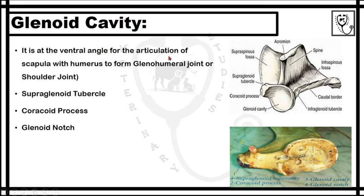The glenoid cavity is a cavity at the ventral angle or ventral part of the scapula bone for the articulation of the scapula with the humeral head to form the glenohumeral joint or shoulder joint. In this clearer picture of the ventral part of the scapula: this is the glenoid cavity, this is the coracoid process, this is the supraglenoid tubercle, this is the spine, at the end of the spine there is the acromion, this is the supraspinous fossa, and this is the infraspinous fossa.